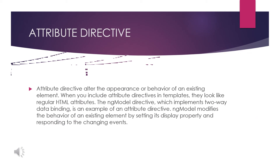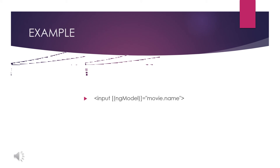As mentioned earlier, attribute directives work like HTML attributes — for example, a paragraph element with id equal to one, where 'id' is the attribute name and 'one' is the attribute value. Here we have an input element with `[ngModel]="movie.name"`. What ngModel does is: based on model changes, the movie name will automatically update. That is the power of attribute directives — if the value changes here, it changes over there as well, and vice versa, enabling two-way binding.